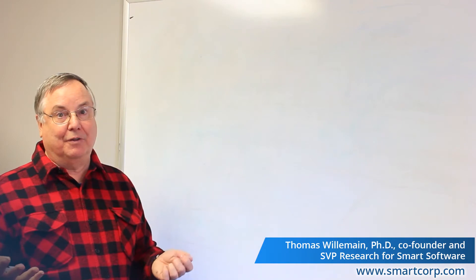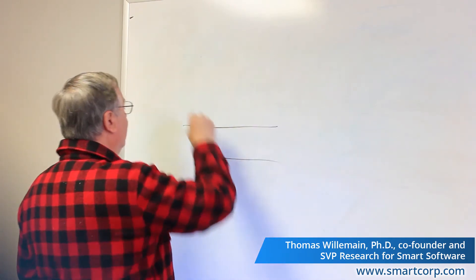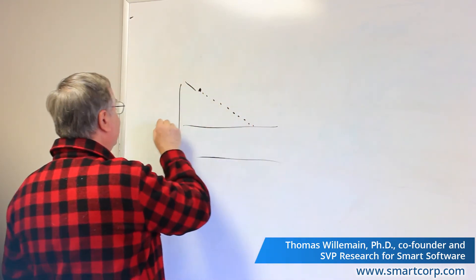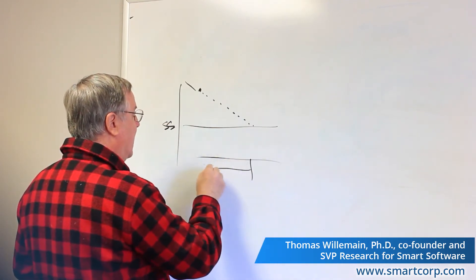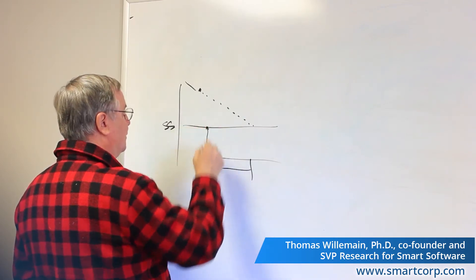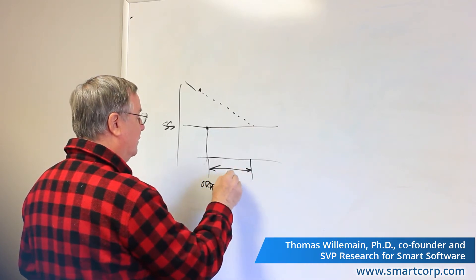Where does the lead time come from? In this particular scenario we have a finished good that has to be assembled from three components — A, B, and C. Think back to our problem: coming down with our forecast, hitting the safety stock, and then working back by lead time to determine when we should order. So this point is when we order, and this gap is the lead time.